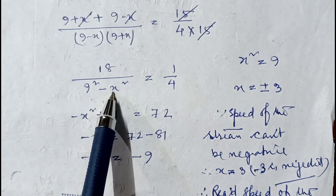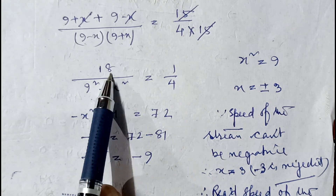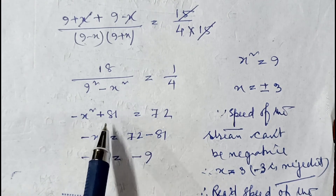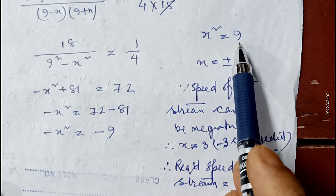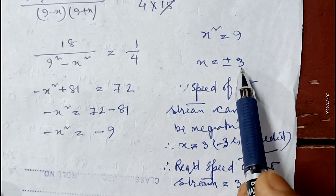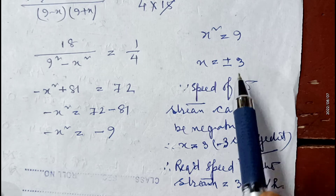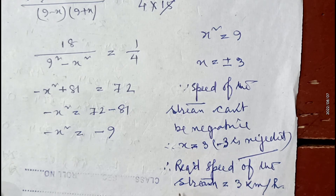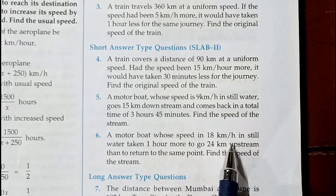Cross-multiplying: 81 minus x² = 72, so x² = 81 minus 72 = 9. Taking square root: x = plus or minus 3. Since the speed of the stream cannot be negative, minus 3 is rejected. Therefore the required speed of the stream is 3 kilometer per hour.